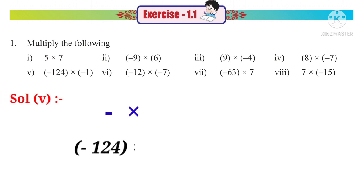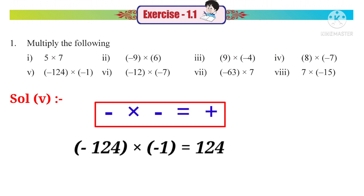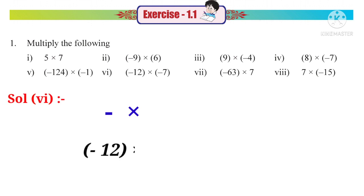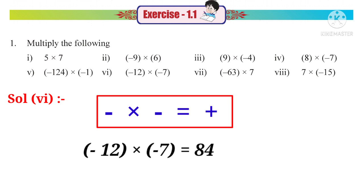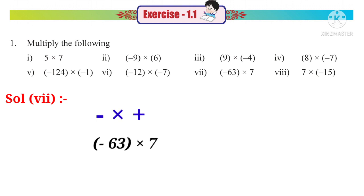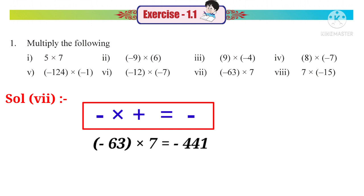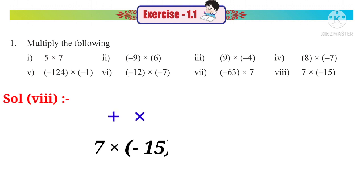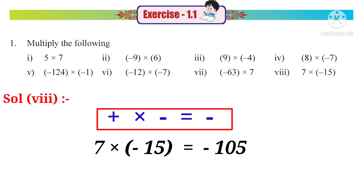Solution 5: minus 124 into minus 1. Both are negative integers, minus into minus is plus, so the result is 124, a positive integer. Solution 6: minus 12 into minus 7. Minus into minus is plus, so minus 12 into minus 7 equals 84, a positive integer. Solution 7: minus 63 into 7. Minus into plus is minus, so minus 63 into 7 equals minus 441, a negative integer. Solution 8: 7 into minus 15. Plus into minus is minus, so 7 into minus 15 equals minus 105, a negative integer.